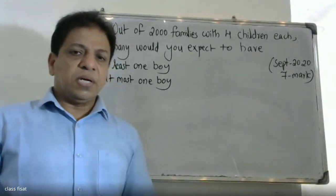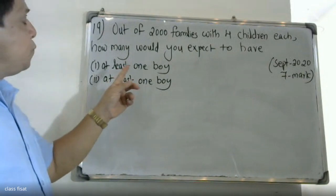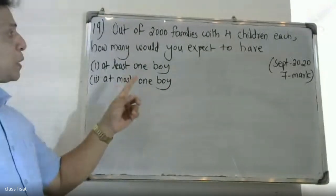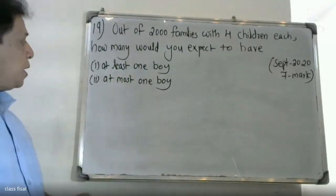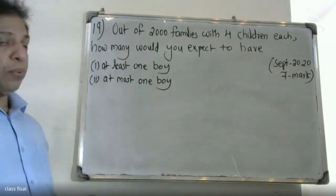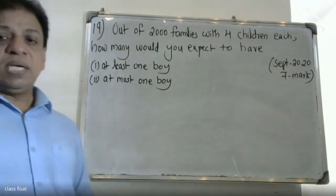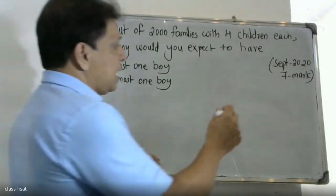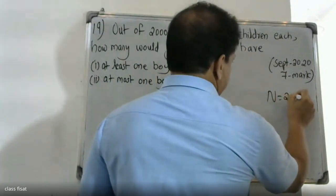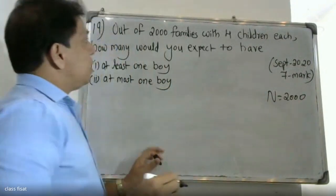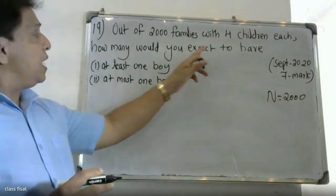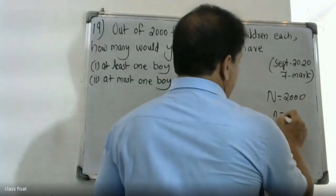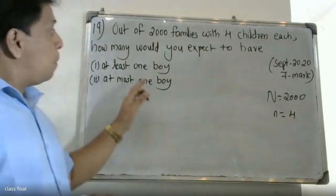Good morning students. Out of 2,000 families with four children each, how many would you expect to have at least one boy, and at most one boy? Out of 2,000 families with four children each, small n is equal to 4.